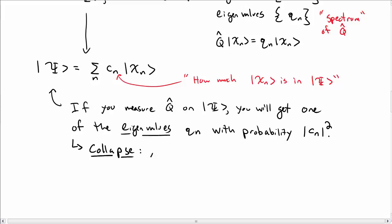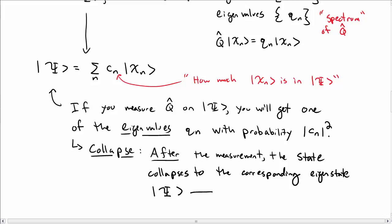There is a corollary to this, which is collapse. Namely, after you make that measurement of q hat, then the state collapses. In particular, it collapses to the corresponding eigenstate of the eigenvalue that you measured. So if you started with capital psi, and then you make a measurement, so then you measure q hat, you will end up with a new state after this chi n. That's the idea behind statistical interpretation and what happens with collapse.